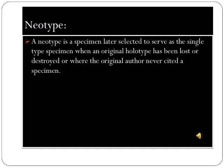A neotype is a specimen later selected to serve as the single type specimen when an original holotype has been lost or destroyed, or where the original author never cited a specimen. The neotype is used instead of the holotype if the holotype is missing.